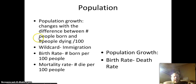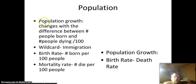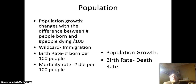So about population first — lots of numbers here. Population growth basically means the difference between the number of people being born and the number of people dying, divided by 100 — you get a percentage. So if we have 99 people being born and 95 dying, it would be 4 out of 100, a 4% growth.